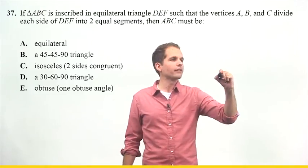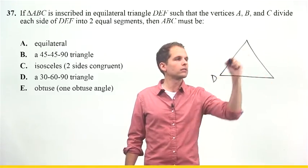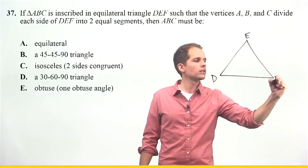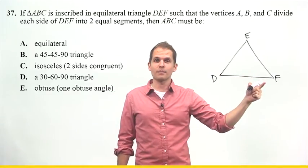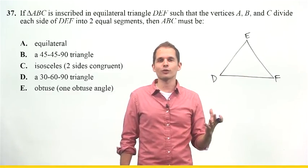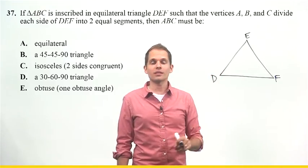So, it tells me that DEF is an equilateral triangle. That just means each of the sides is the same. It also means that each of the angles is the same. So, if the sum of the angles of a triangle is 180, then the angles of an equilateral triangle are always 60.